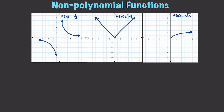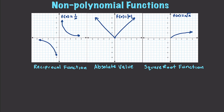Then you have your non-polynomial functions. The first is a reciprocal function — this is the type of look that you get whenever you have a value of x in the denominator. After that we have an absolute value function. The whole point of me showing you this is so that you will be able to see the function and immediately have a rough idea of what the graph should look like. And finally we have our square root function, which occurs whenever you take the square root of some value of x.